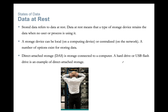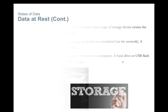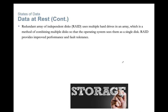Direct Attached Storage, or DAS, is storage connected directly to a computer — a hard drive or USB flash drive is an example. By default, systems are not set up to share DAS. RAID, or Redundant Array of Independent Disks, uses multiple hard drives combined so the operating system sees them as a single disk, providing improved performance and fault tolerance.